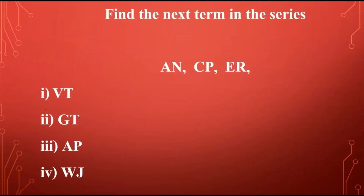The first question: find the next term in the series A N, C P, E R. So what we're going to do is find a relationship between the letters. Let's look at the first letter in each term. The first letter in the first term is A, the first letter in the second term is C, and the first letter in the third term is E.